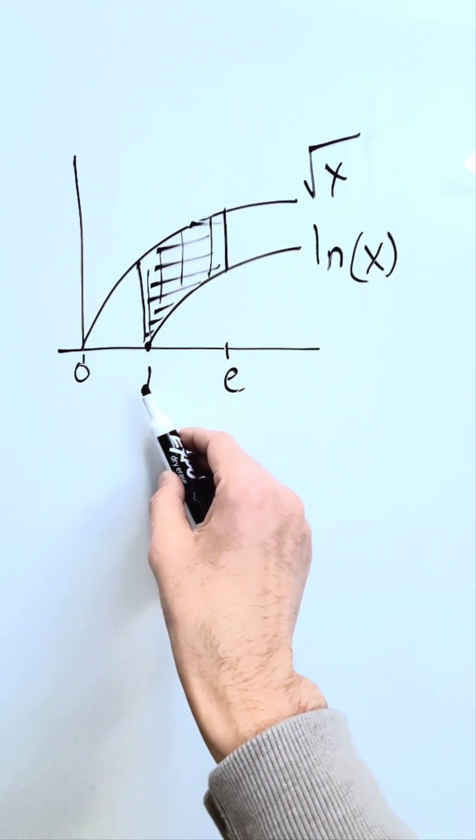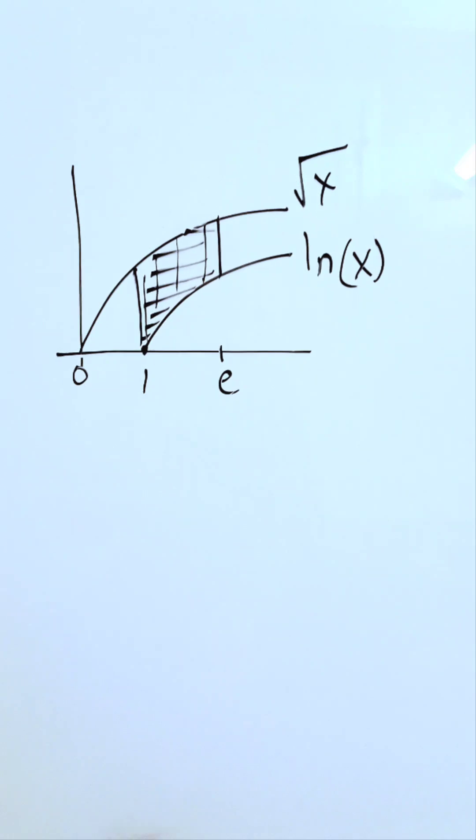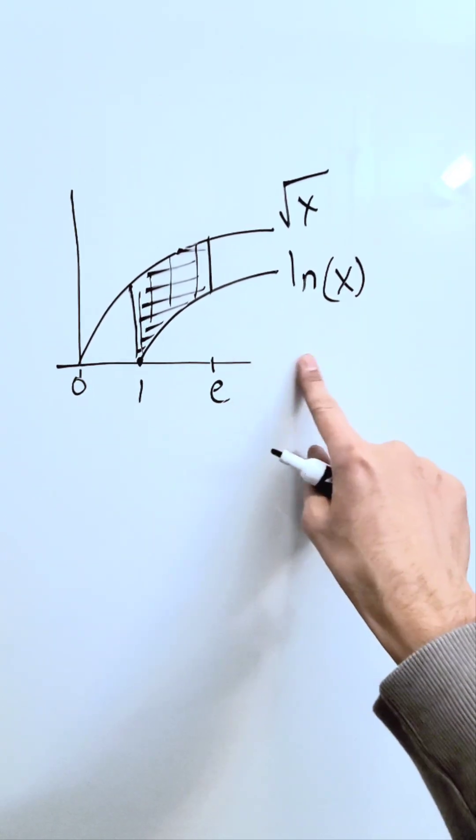I'm looking here at an area determination from 1 to e, the shaded region between the two curves. How can I do it? Your representation is not hard.